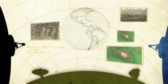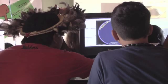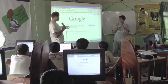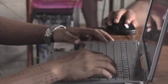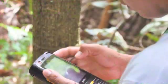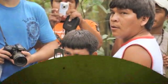Earth Engine is also empowering local communities in the developing world. The indigenous Surui tribe in the Brazilian Amazon, for instance, is using satellite imagery in combination with smartphones to monitor and protect their rainforest.